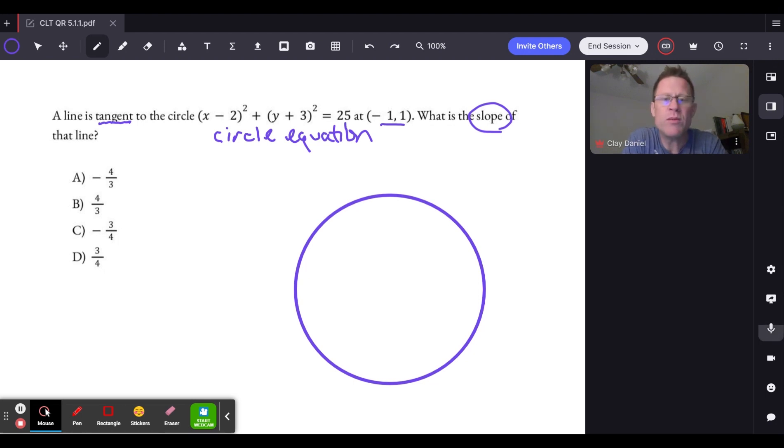And a line can be tangent to a circle at exactly one point—not more than one point, but it can touch any place around the edge of a circle. However, before we draw that line, we need to figure out where the point is, negative 1, 1 on the circle.